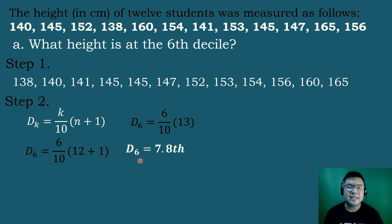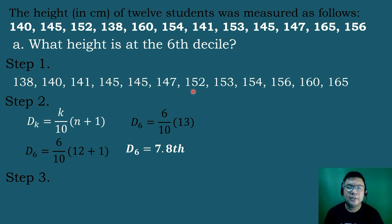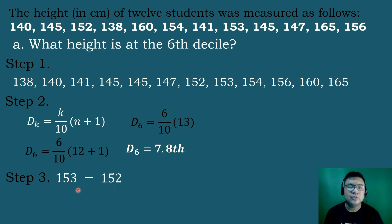So Decile 6 is at the 7.8 position, meaning it is somewhere in between the 7th and the 8th number. For step 3, we identify the 7th and 8th numbers. Counting through the list, the 7th number is 152 and the 8th number is 153. We subtract: 153 minus 152 equals 1.